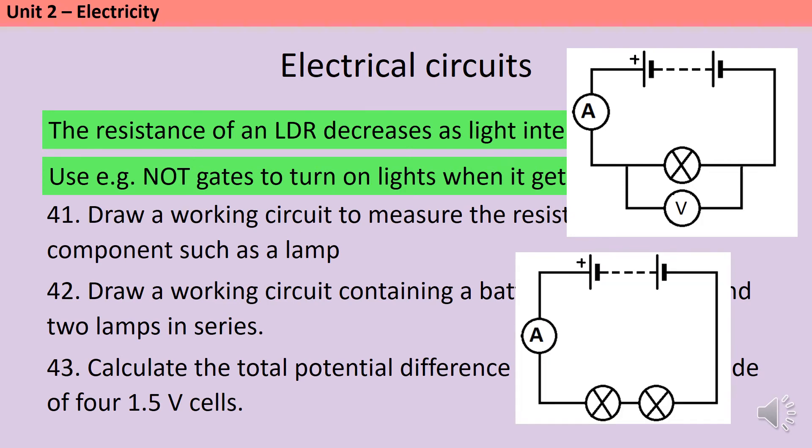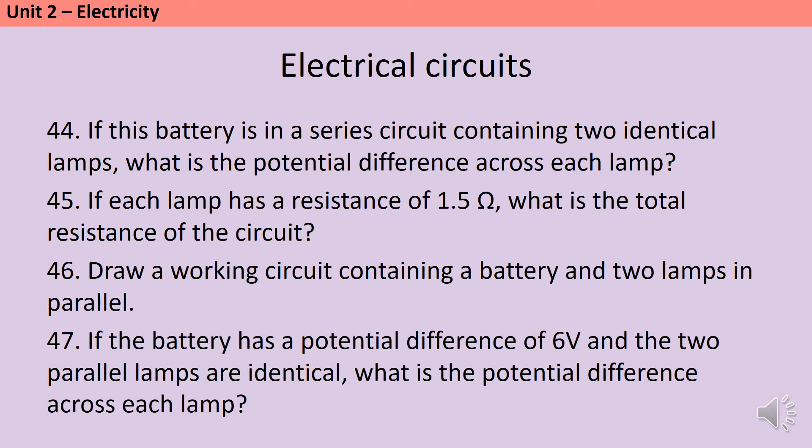Here's an example of a series circuit involving a battery, two lamps in series, and also an ammeter. If you have a battery that has four 1.5V cells, then the total potential difference across that battery is just the potential difference of the four cells added together because they're wired together in series. So four lots of 1.5 would give you a potential difference of six volts. If this six volt battery is in a series circuit with two identical lamps, then the potential difference across each lamp will be half of the total, so three volts. If each lamp has a resistance of 1.5 ohms, then assuming there are no other components, the total resistance of the circuit will be three ohms because you can just add up the resistance of components in series.